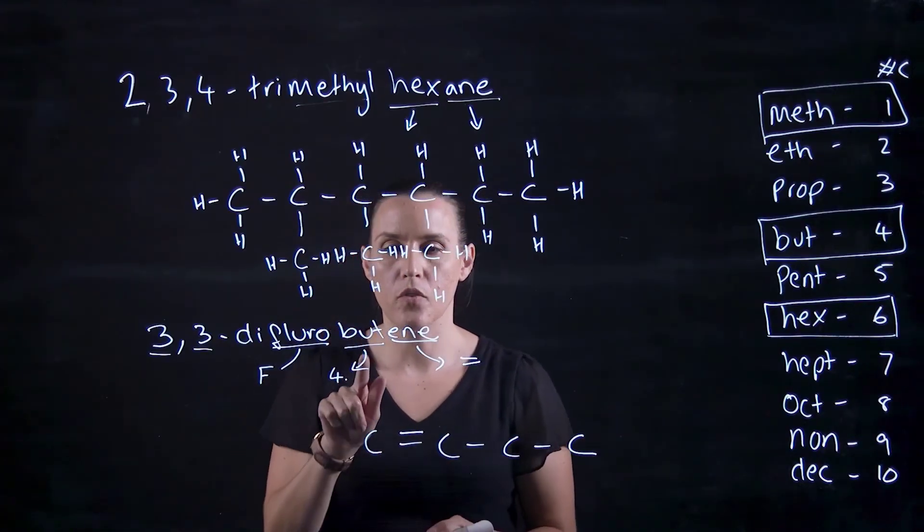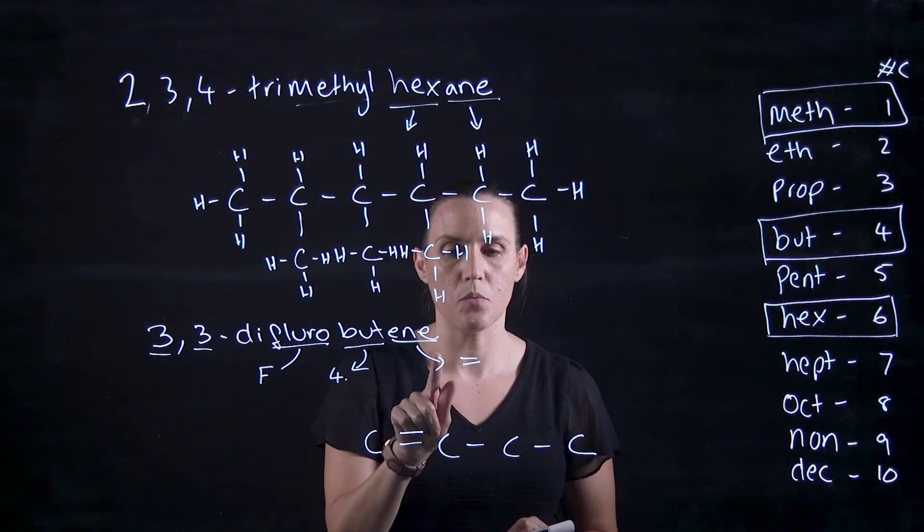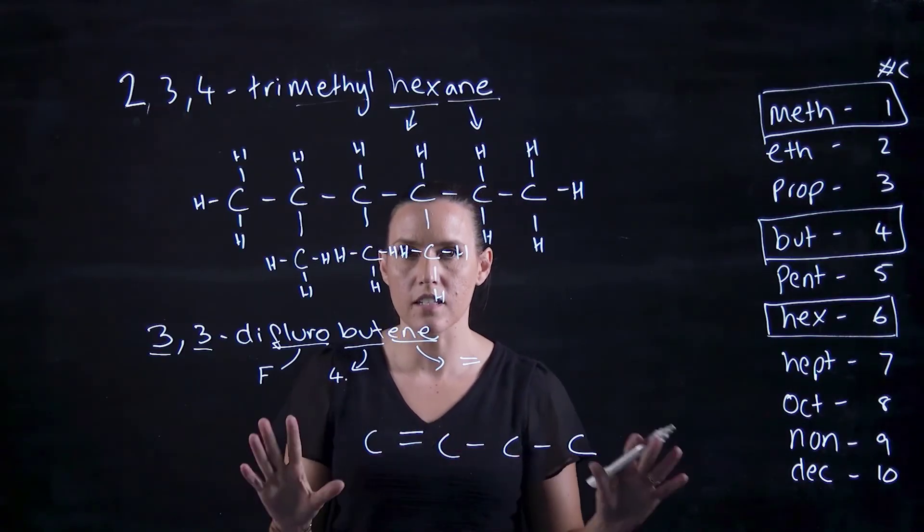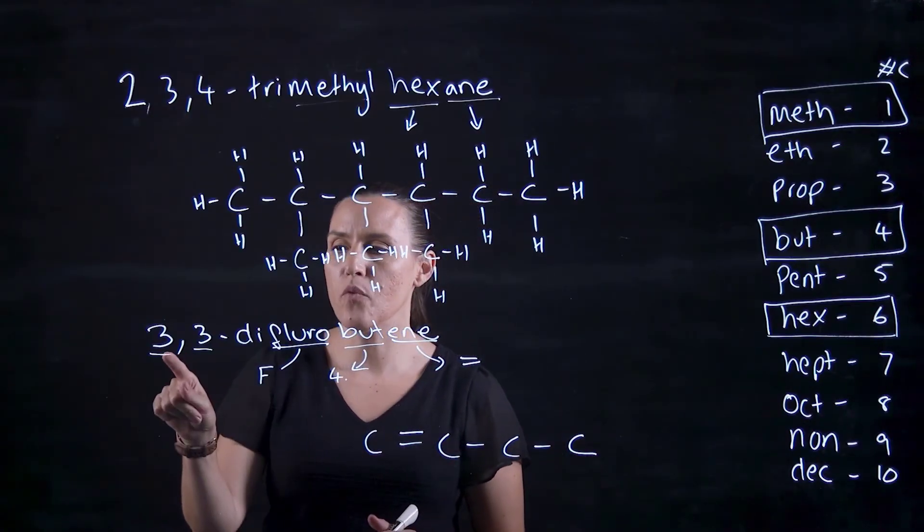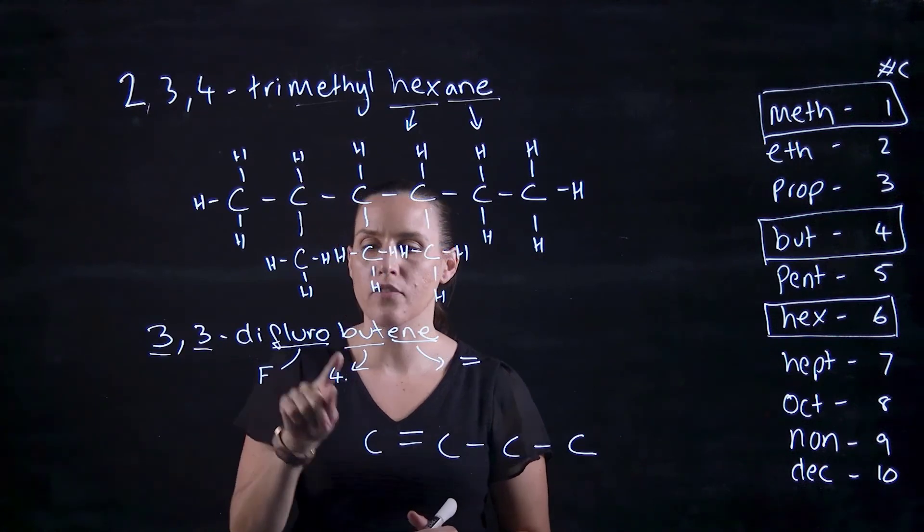So if we look at this one here, we've got four carbons, we've got our double bond. So that's good for our skeleton at the moment. And then we've also got to put in 3,3-difluoro.